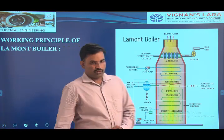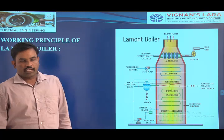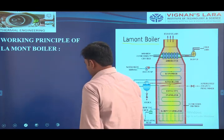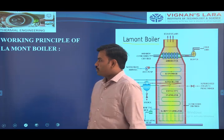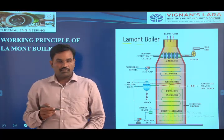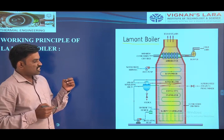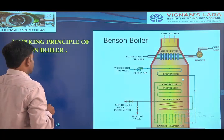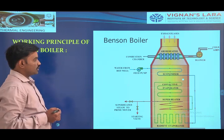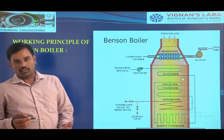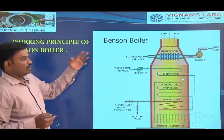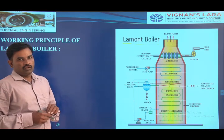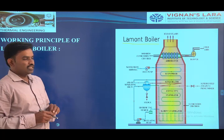Next, see the two important types of high pressure boilers. We are having two different types of high pressure boilers: one is the La Mont boiler and the second one is the Benson boiler. We are using these two boilers for increasing the quality of steam and quantity of steam. Without a drum, we are generating high pressure and good quality steam — that is the Benson boiler. With the use of a boiler drum, we are generating the steam — that is the La Mont boiler. These two are very important types of high pressure boilers.